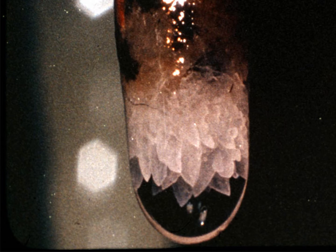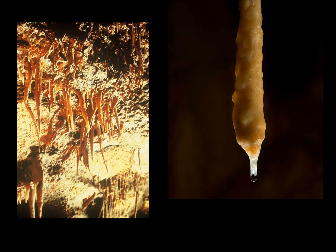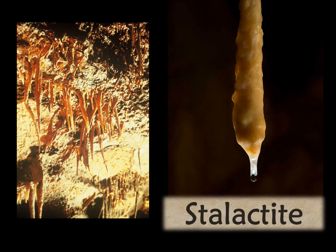Here's a close-up of the tip of a soda straw. The crystals are normally too small to see, but this is a perfect example of how the calcite crystals form together in speleothems. The most common of all speleothems are carrot-shaped and called stalactites. The C in the middle of the word will help you remember that stalactites form down from the ceiling.